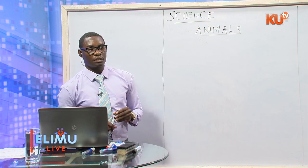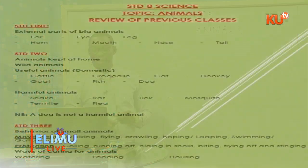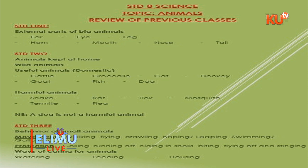The first thing you learn about animals is in grade 1, and you talk about external parts of animals. The external parts of an animal include the ears, the nose, the legs, the mouth, the horn, and the tail. We also have standard 2 work, and what you learn is animals that are kept at home.